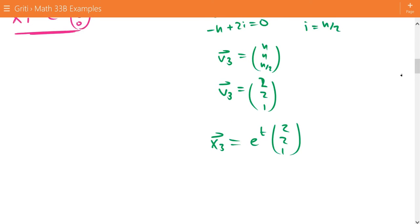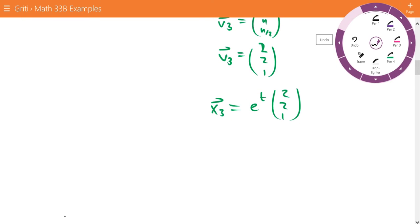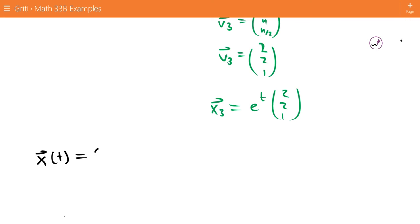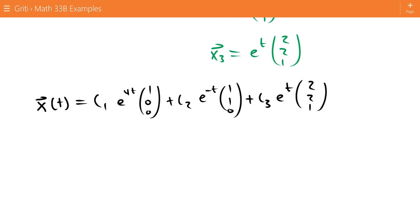So our final solution is X of t equals C1 times our first solution, X1, which is e to the 4t times 1, 0, 0, plus C2 times e to the negative t times 1, 1, 0, and then C3 times e to the t times 2, 2, 1.